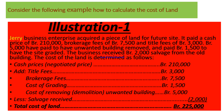When we come to the illustration — the best example of how to calculate the cost of land: Jerry Business Enterprise acquired a piece of land for a future site. It paid a cash price of $210,000, brokerage fees of $7,500, and title fees of $3,000. A payment of $5,000 was made to have unwanted buildings removed, and $1,500 to have the site graded. The business received $2,000 in salvage from the old building.